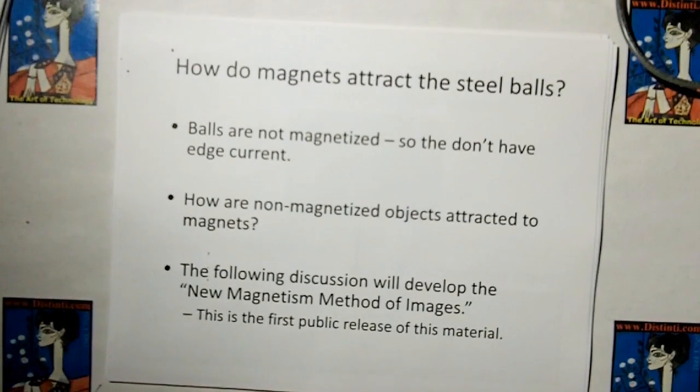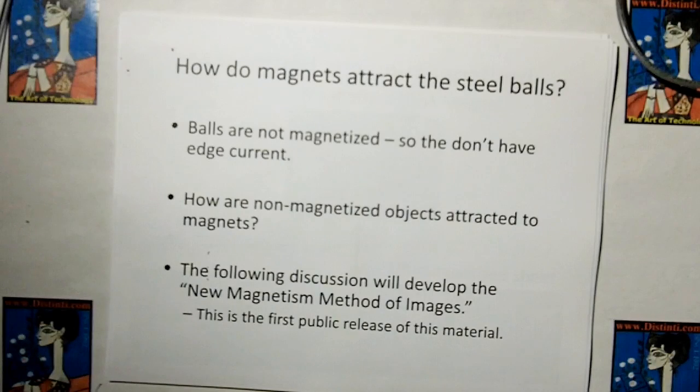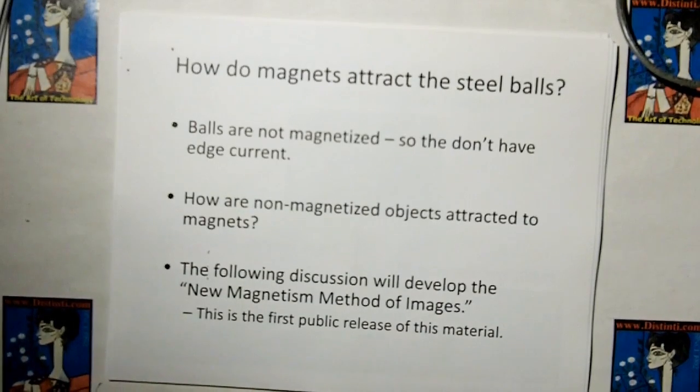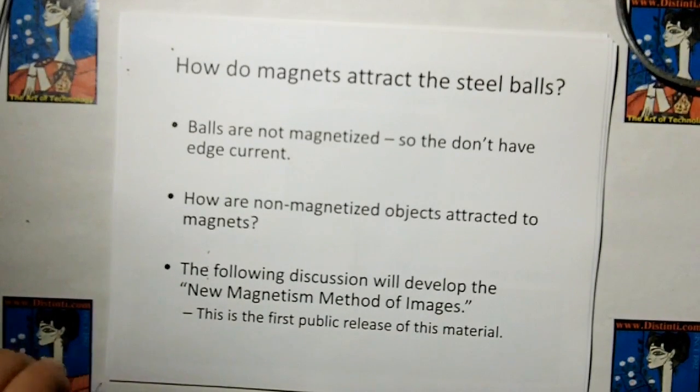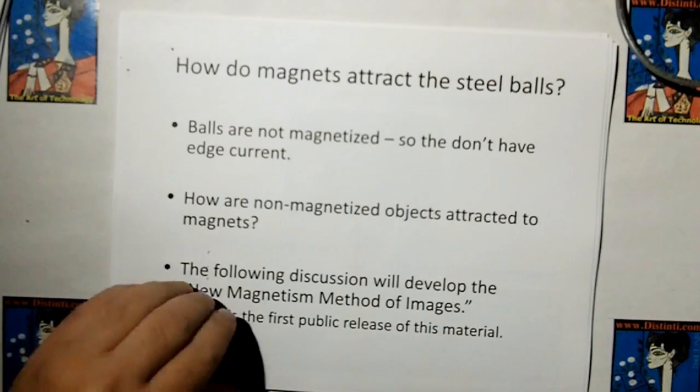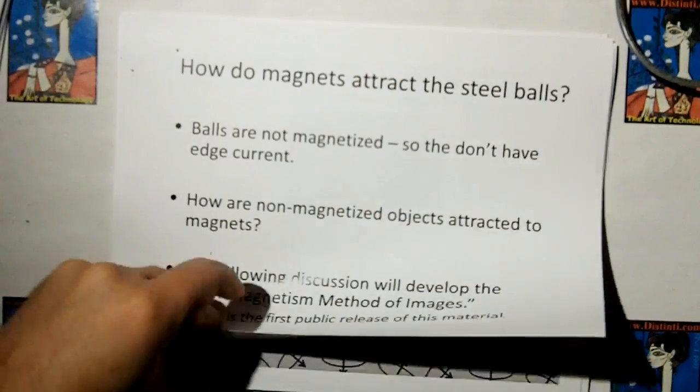But how do magnets attract the steel ball? Let's do the steel balls first. Remember, the balls are not magnetized, so they don't have an edge current. So how are non-magnetized objects attracted to magnets without the edge current? The following discussion will develop how the new magnetism model of images causes an edge current to occur. And again, this is the first public release of this material.